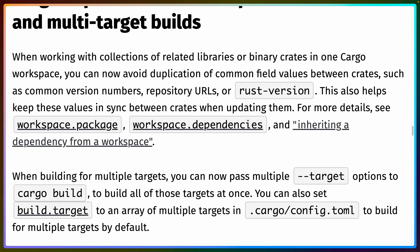You can also now pass multiple targets to cargo build. So if you're building for Linux, Apple Silicon Macs, and x86 or something like that, you can pass all three of those targets. The --target flag is now an array of targets, and they'll all build at the same time.